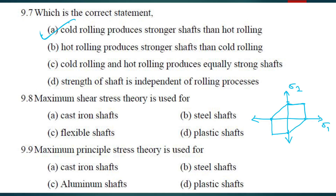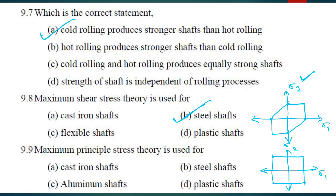From the options, steel shaft — steel is a ductile metal, so we can use the maximum shear stress theory for a steel shaft. For the maximum principal stress theory, the graph comes as a square for sigma 1 and sigma 2. This is used for brittle metals. Steel is ductile, aluminum is also ductile. Cast iron is a brittle metal. So MPST — maximum principal stress theory, also called Rankine theory or Guest and Tresca theory — is used for cast iron. These names and graphs you have to remember.